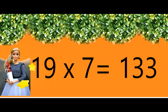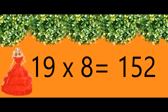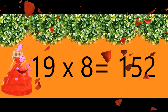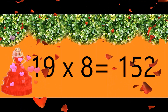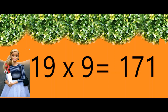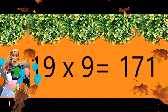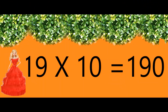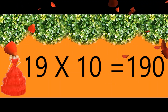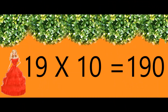Nineteen sevens are one hundred and thirty-three. Nineteen eights are one hundred and fifty-two. Nineteen nines are one hundred and seventy-one. Nineteen tens are one hundred and ninety.